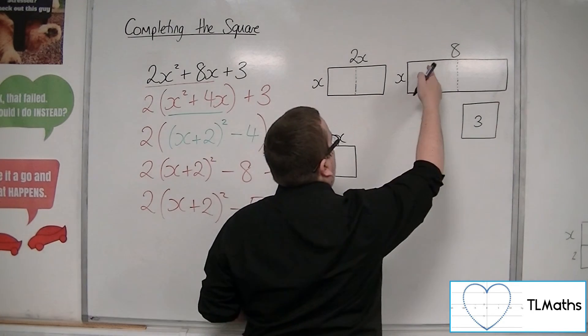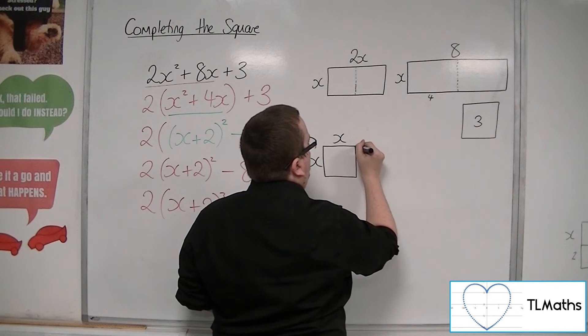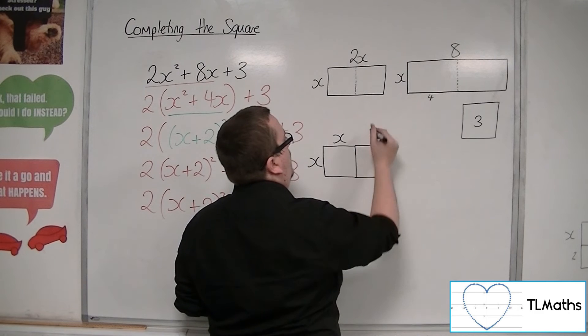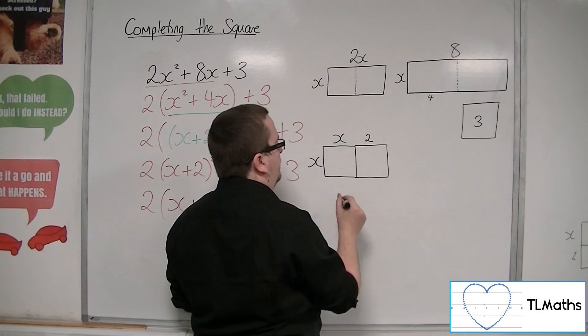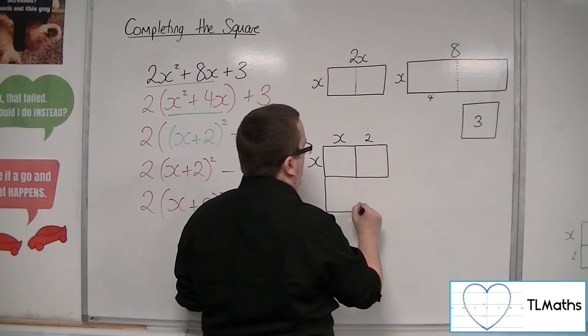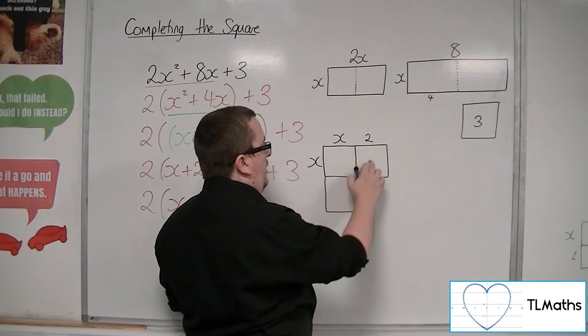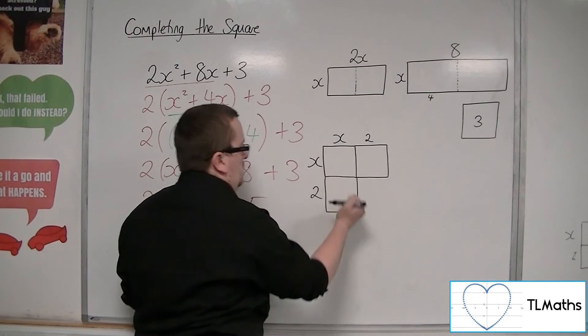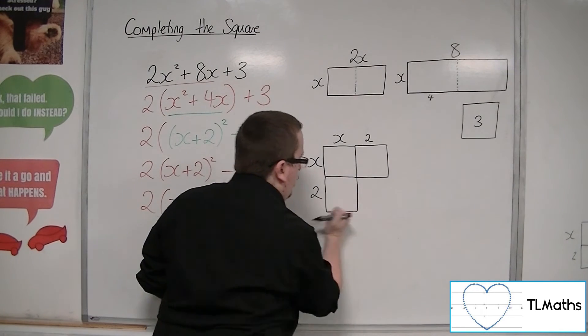Now I could cut that in half so that I had a piece there, which is x wide but only 2 long, and another piece there, which is the same size as that one, which is 2 long and x deep. So I don't really need to have that one there, do we?